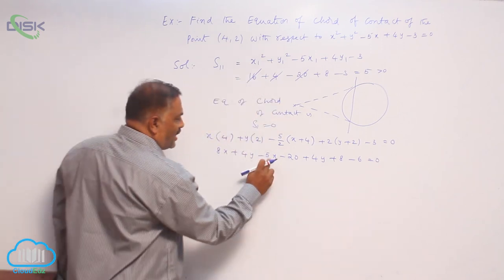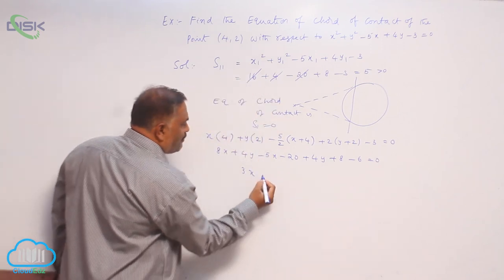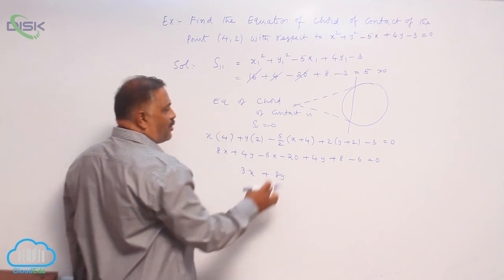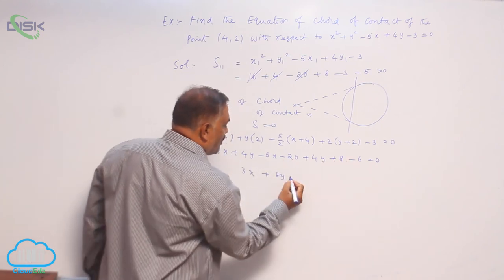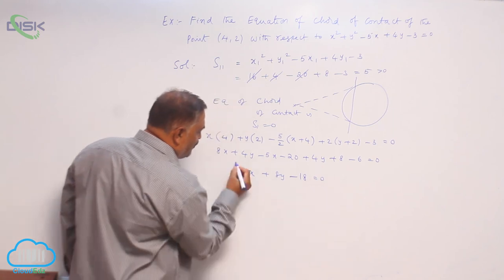Now 8x and 5x means 3x plus 8y. Now constant is 2 minus 18 is equal to 0. So this is equation of chord of contact.